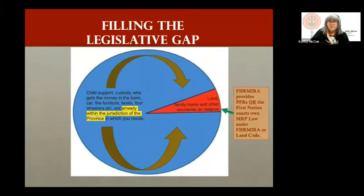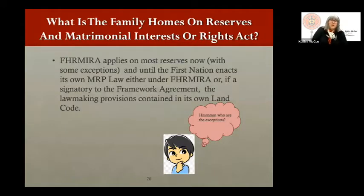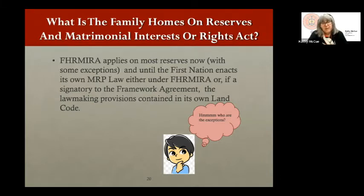FORMIRA provides the provisional federal rules, or the First Nation enacts its own matrimonial real property law either under FORMIRA or under its land code. FORMIRA applies on most reserves, but there are some exceptions, until the First Nation enacts its own MRP law.